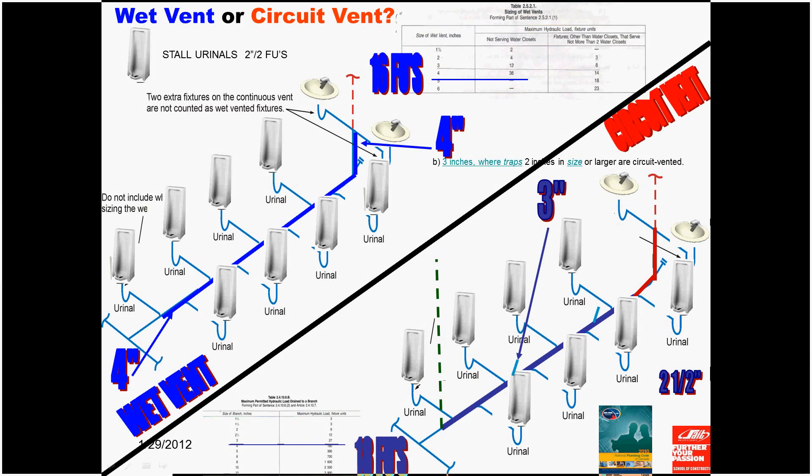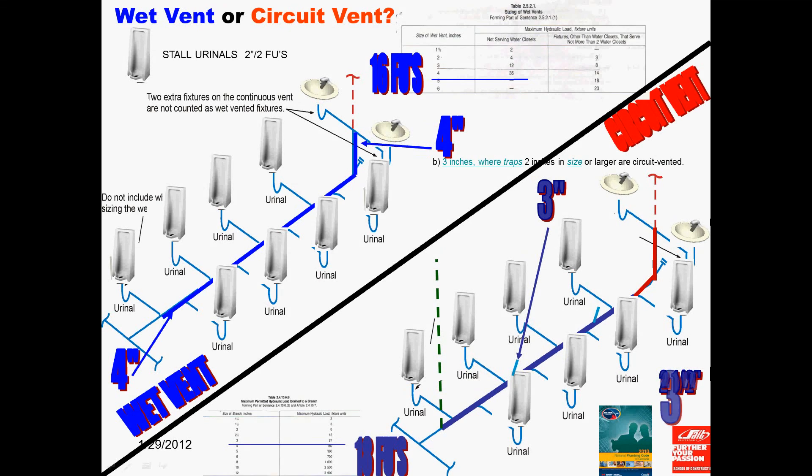If you look at your table, that will give you a 2.5 inch branch, which doesn't exist in the trade, but it is in your code book. However, is that still the correct size? No, it isn't, because you have to look at Clause 25319B, which tells you that if you have 2 inch traps or bigger in the circuit vented branch, this is a shortcut rule, then the circuit vented branch minimum size will be 3 inches. Hence, you will have to change the 2.5 inches to 3 inches.